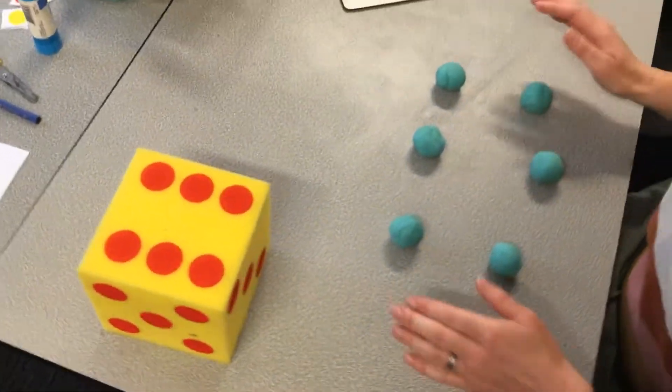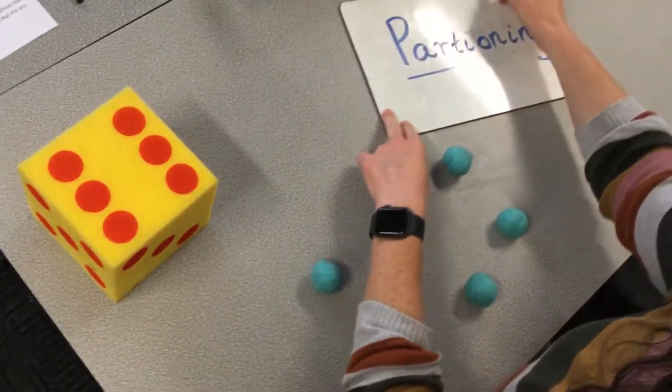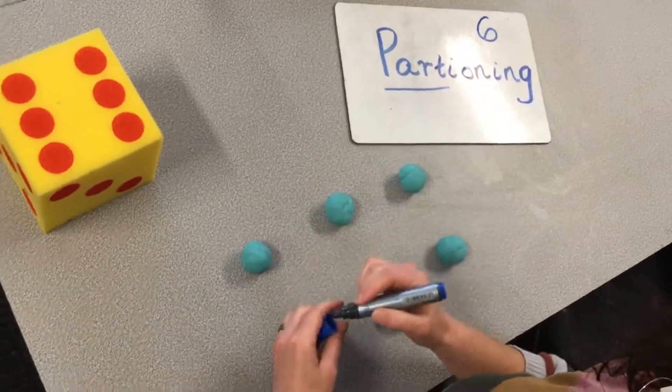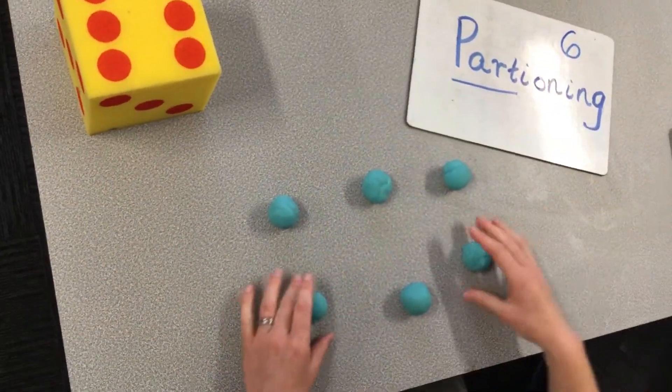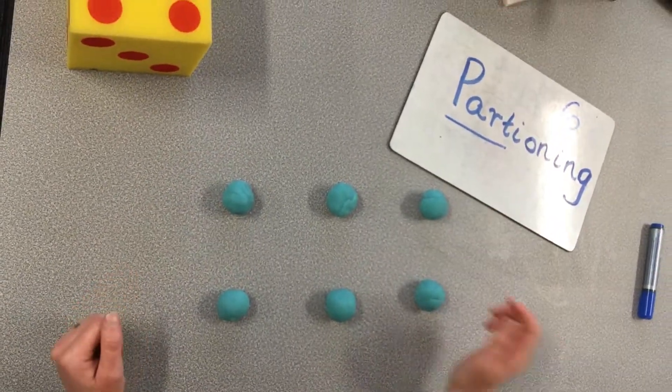I'm going to start with some Play-Doh today because we've got a very special number. Our number today that we're going to be breaking apart is the number six. And so in front of me you can see that I've got six balls of Play-Doh.